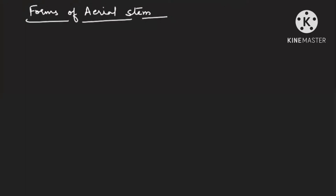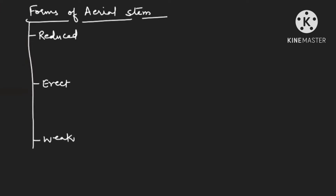Hello students, welcome back to the channel. In this video we are going to study about the types of stems: aerial stems and their modifications, underground stem modifications, subarial stem modifications, as well as aerial stem modifications. First of all, there are three forms of the aerial stem: they can be either reduced, erect, or weak.